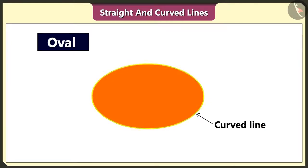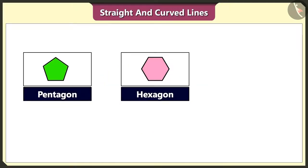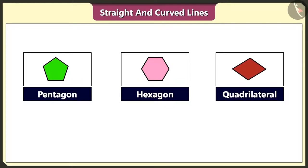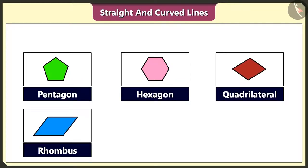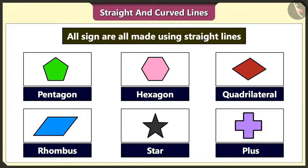You are right. Do you know that pentagon, hexagon, quadrilateral, rhombus, star, and plus sign are all made using straight lines? Yes.